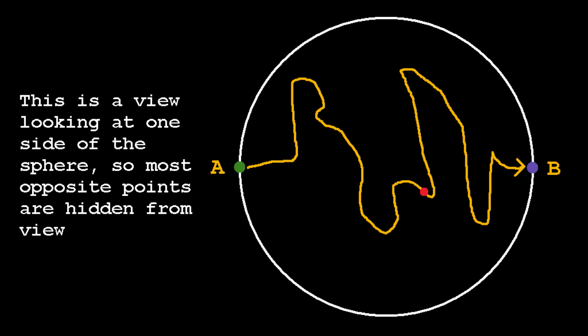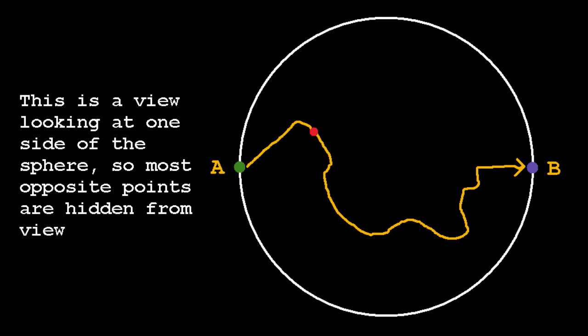This is very important. It means that every path from A to B contains a point which has equal temperature to its opposite.